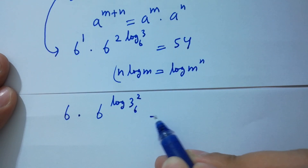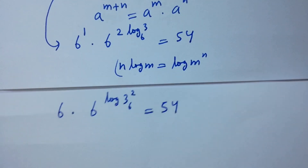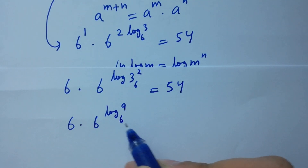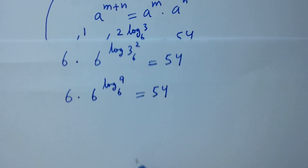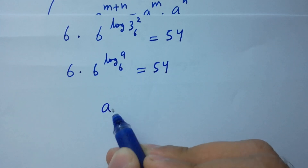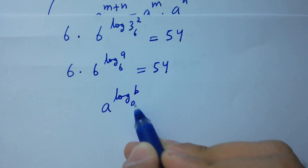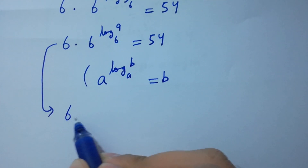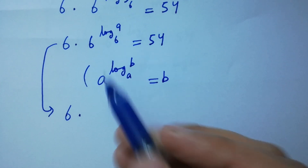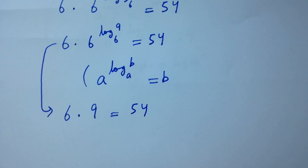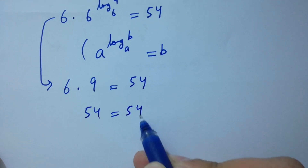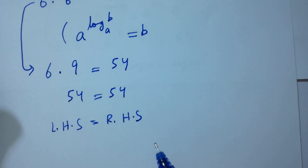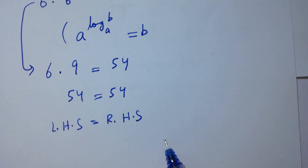In the next step, 6 times 6 to the power log 9 to the base 6 equals 54. Using a to the power log b to the base a equals b, we get 6 times 9 equals 54. Six times 9 is 54, equal to 54. Left hand side equals right hand side, which shows that the value of x satisfies the equation. Thanks for watching this video.